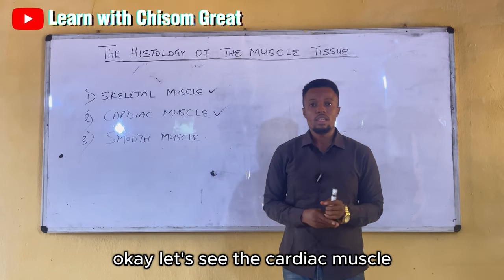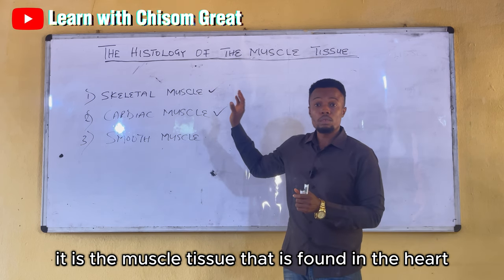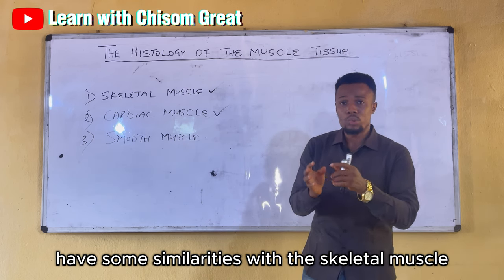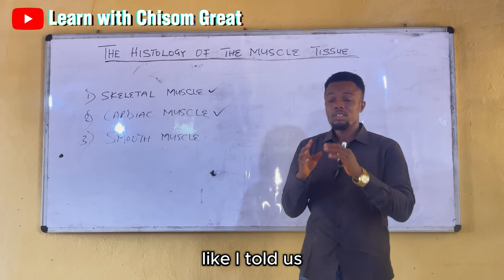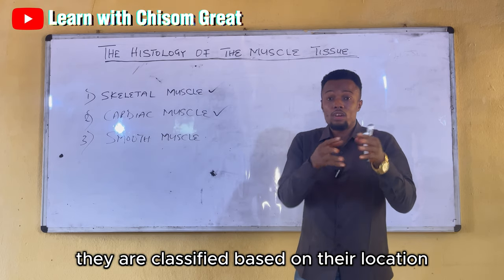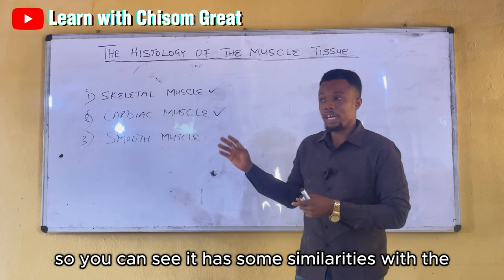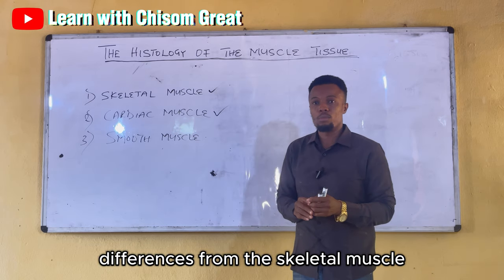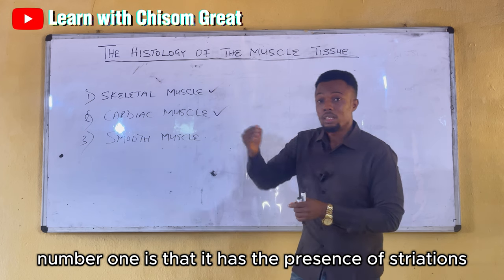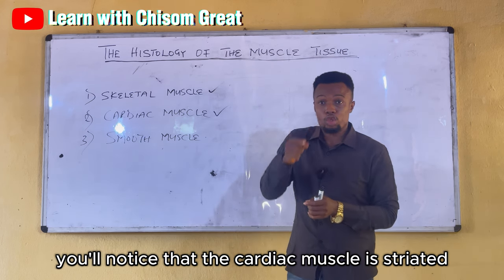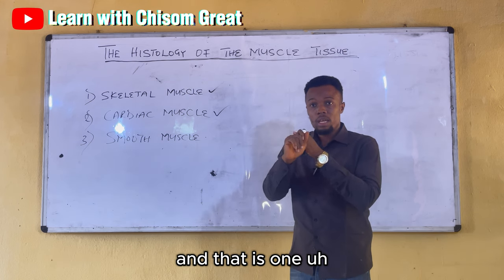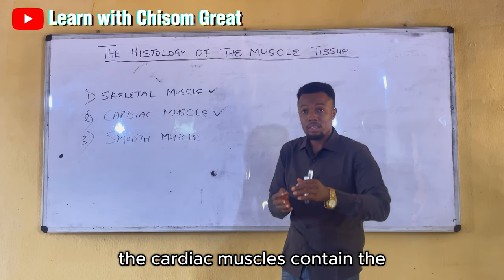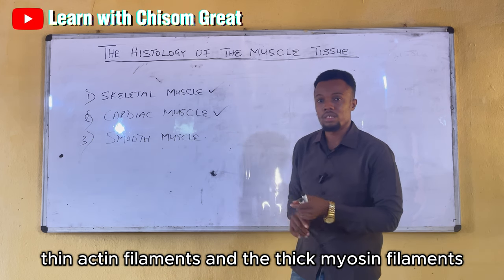Now let's look at the cardiac muscle. The cardiac muscle is the muscle tissue found in the heart. It has some similarities with the skeletal muscle. First, it has the presence of striation — the cardiac muscle is striated. Second, it contains myofilaments: the thin actin filaments and the thick myosin filaments, which are the contractile units of the cardiac muscle.